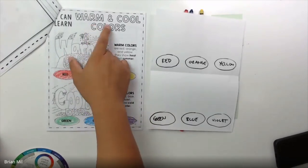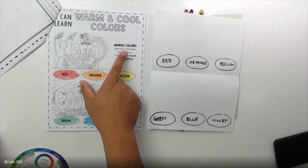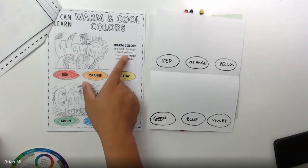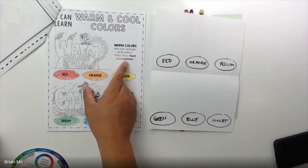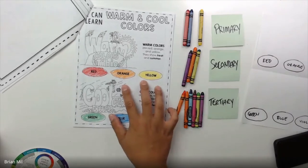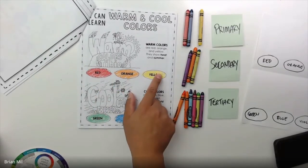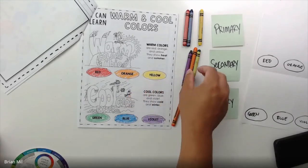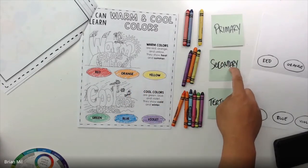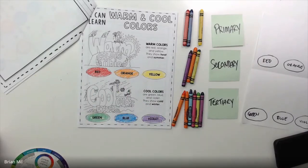So if you have the packet, it should look like this. If you don't have the packet, if you have a blank sheet of paper, it looks like this. And if you don't have either of these things, just watch. We're gonna follow along with this page and we'll color it accordingly. So don't go ahead. It says warm and cool colors. The warm colors are red, orange, and yellow. They show heat and summer. So what you're gonna do, there are two colors that are the primary colors, which is red and yellow. Fill those in. And then there's one secondary color that's used in the warm color, which is orange. Do that right now.